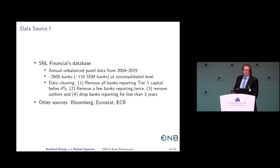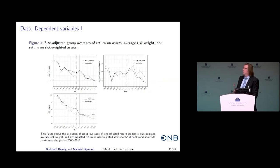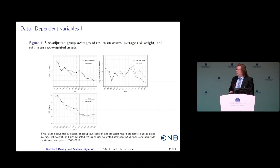The data come from the official SNL Financials database. We have an unbalanced panel of about 2,600 banks, with about 116 as SSM banks. We do some data cleaning using Bloomberg, Eurostat, and ECB data. The appendix shows how the three outcome variables develop over time for SSM and non-SSM banks — size-adjusted figures with size effects already removed.